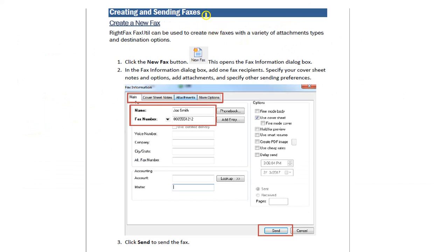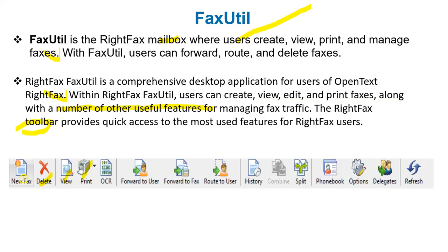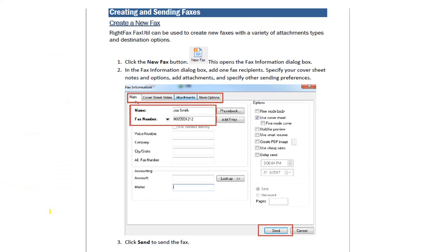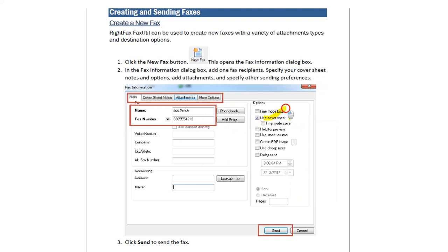The toolbar includes options like New Fax, Delete, View, Print, Forward to Fax, Forward to User, Route to User, History, Phone Book, Options, and Delegate. FaxUtil is essentially a mailbox where users can create, view, and print faxes. For creating and sending a fax, you go to New Fax and you get options for fax number, name, cover sheet, attachments, and more options. You can choose to use a cover sheet, define the fax number, voice number, company, and address. You can save or send the fax.